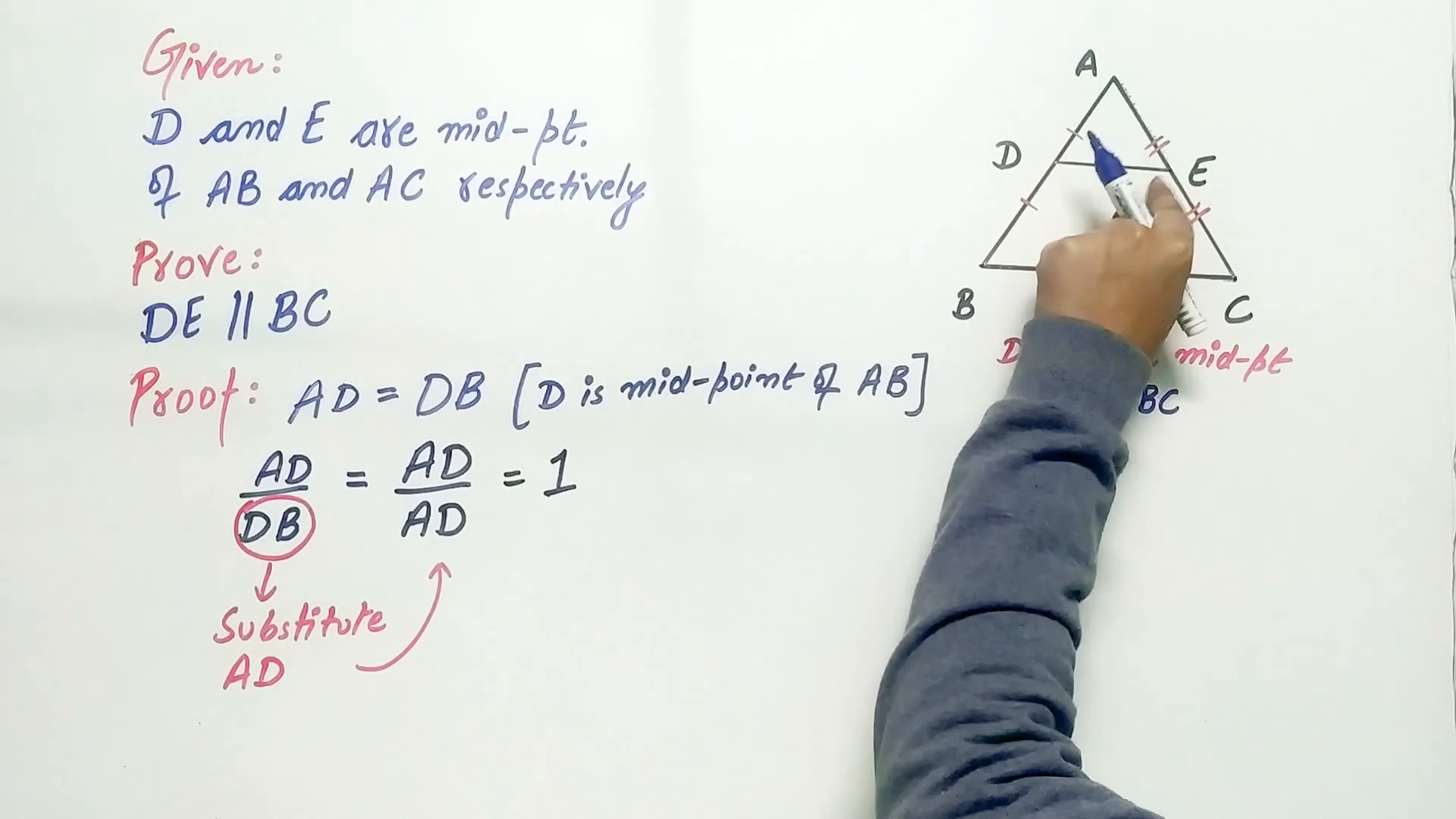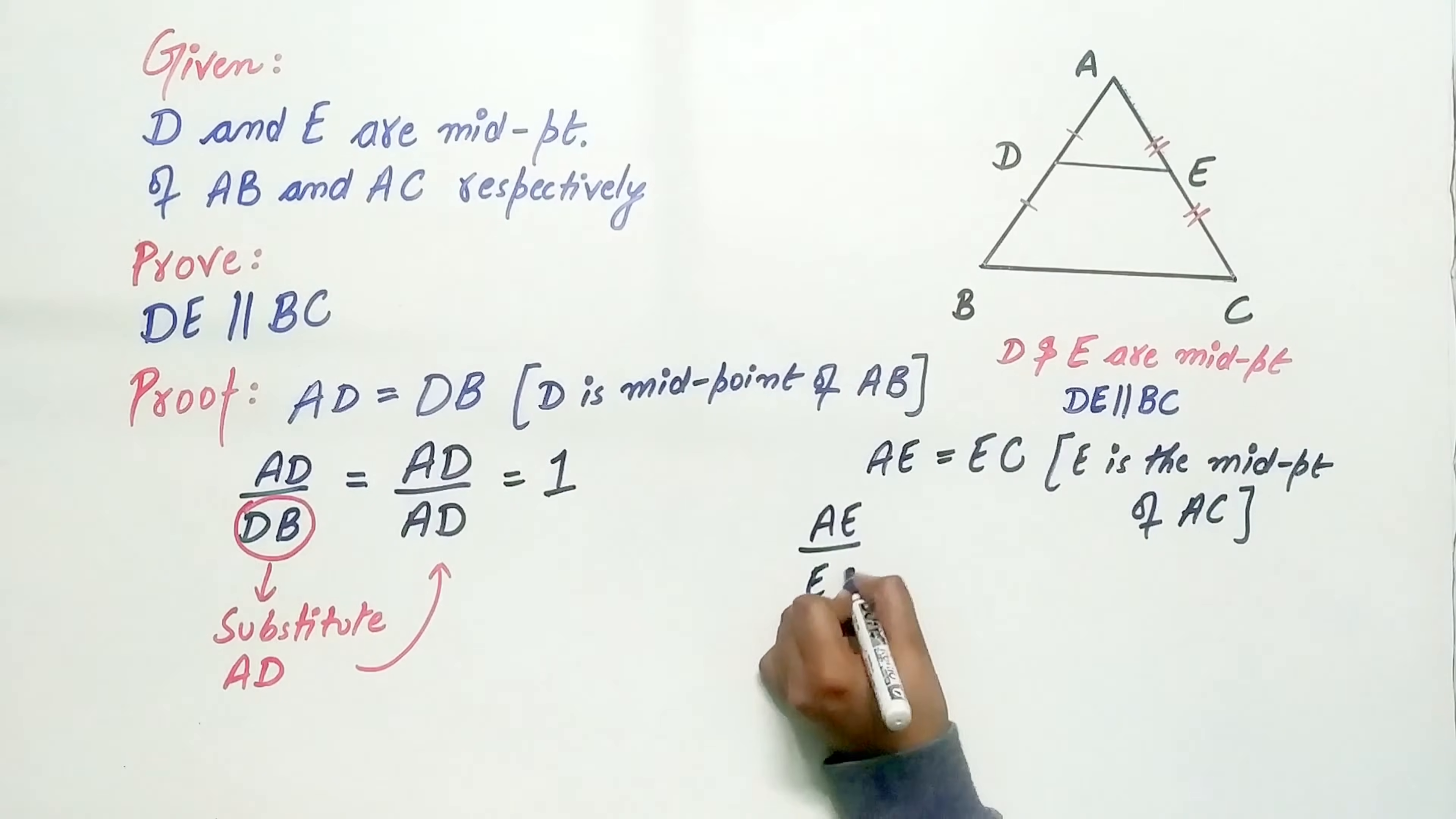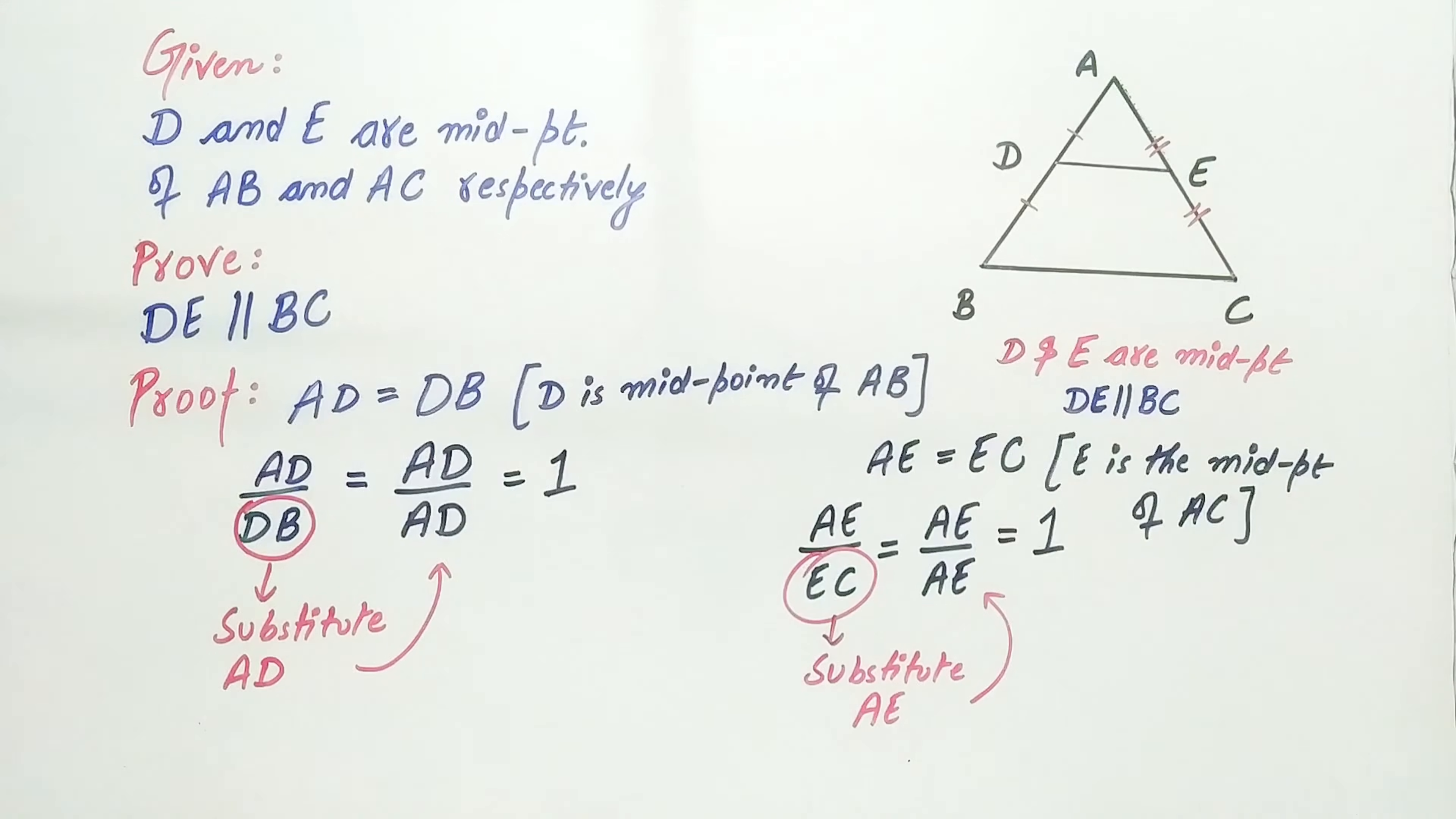Similarly, AE is equal to EC. Why? Because E is the midpoint of AC. So AE by EC is equal to AE by AE, and AE by AE is equal to 1.